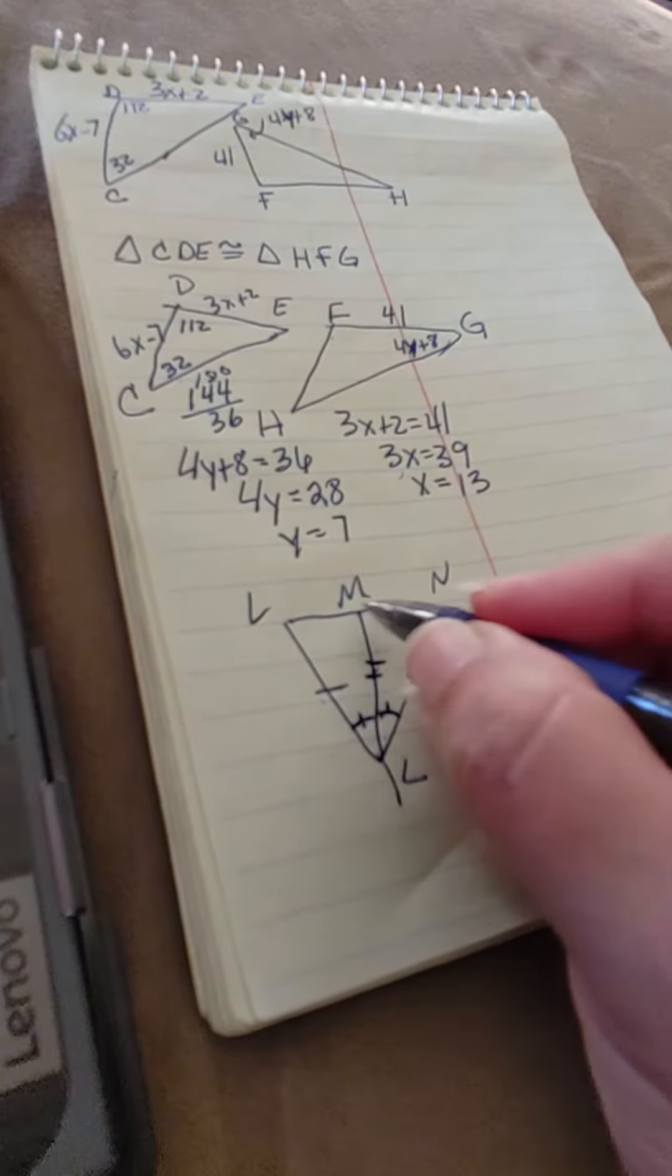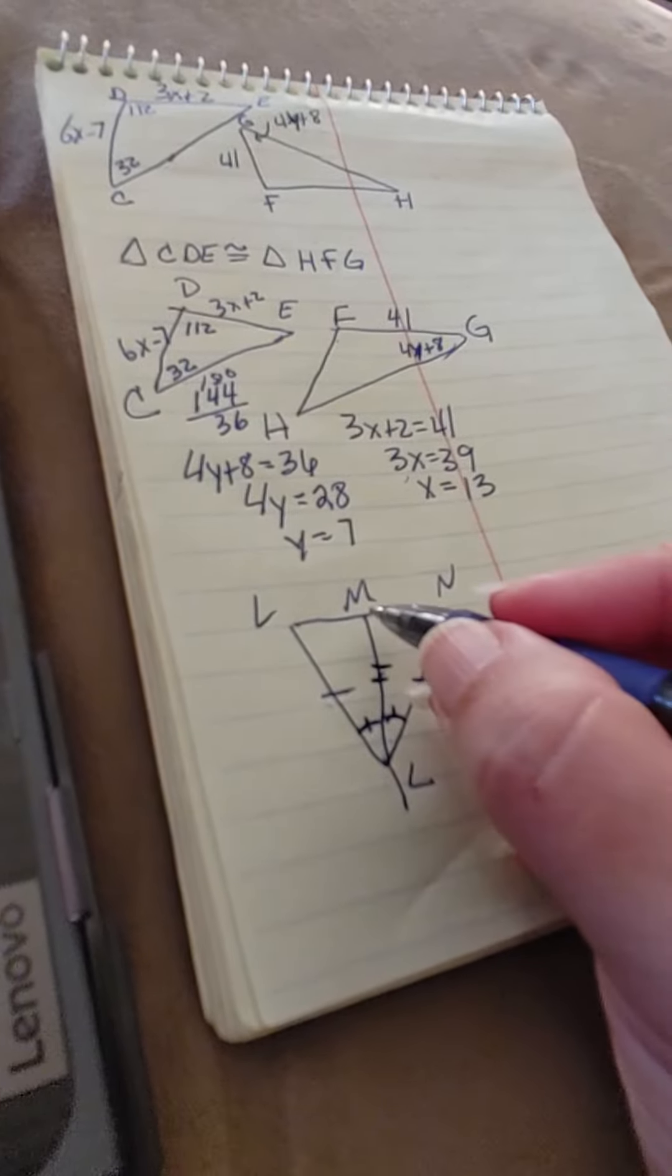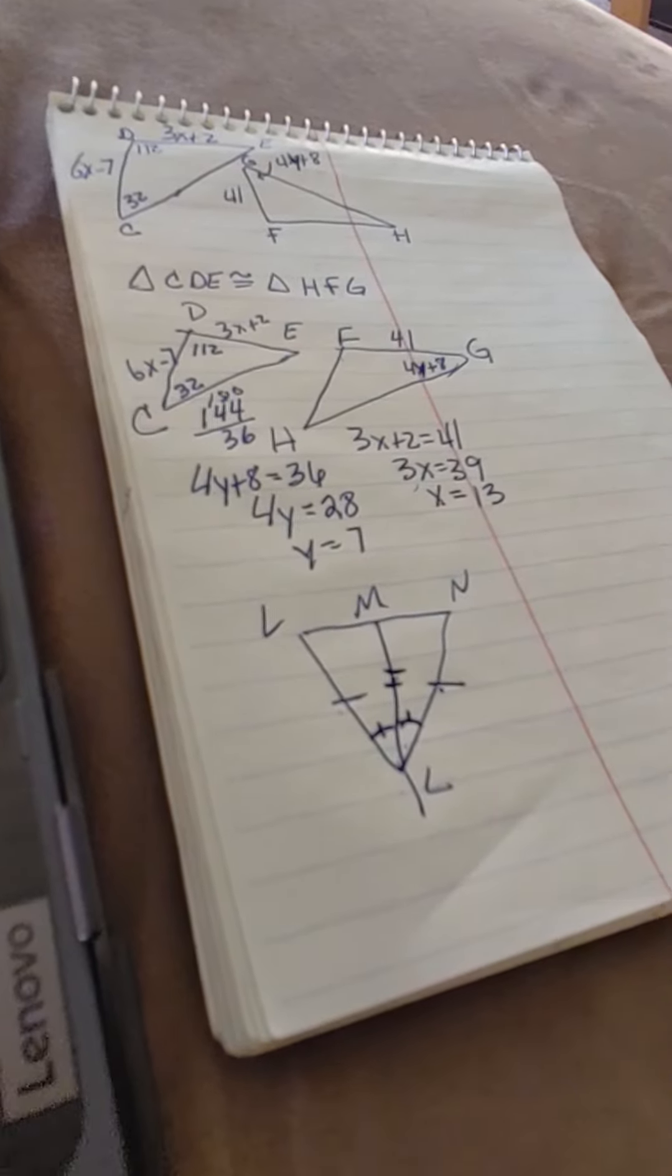Because if we had this angle, we would have another side, so that wouldn't work. This angle would not work. So it has to be K.